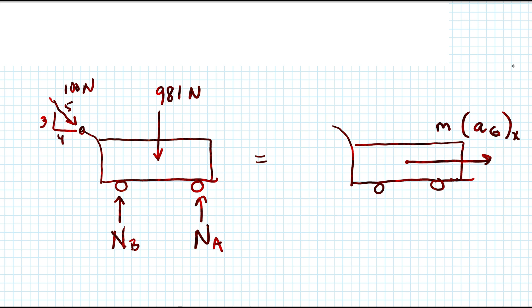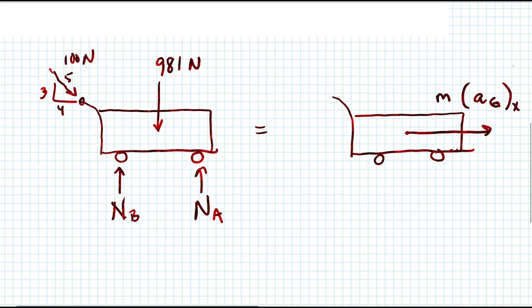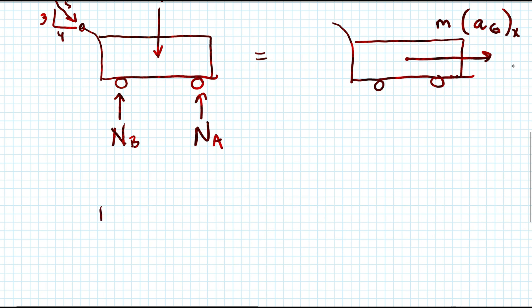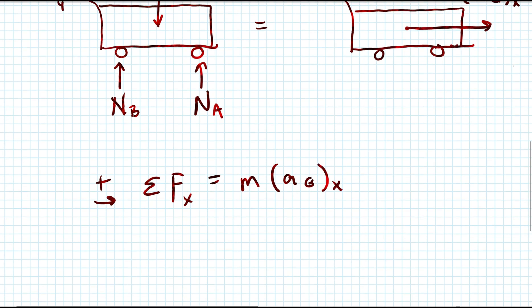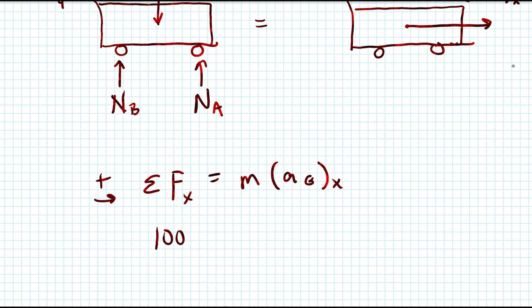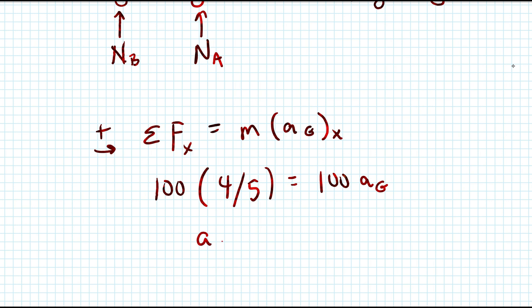Next, we'll apply the equation of motion in the X direction first. So we have the summation forces F sub X equals M A G sub X. For us, that gives us 100 times 4 over 5 equals 100 A sub G. And then we'll get A sub G, which is equal to 0.8 meters per second squared.